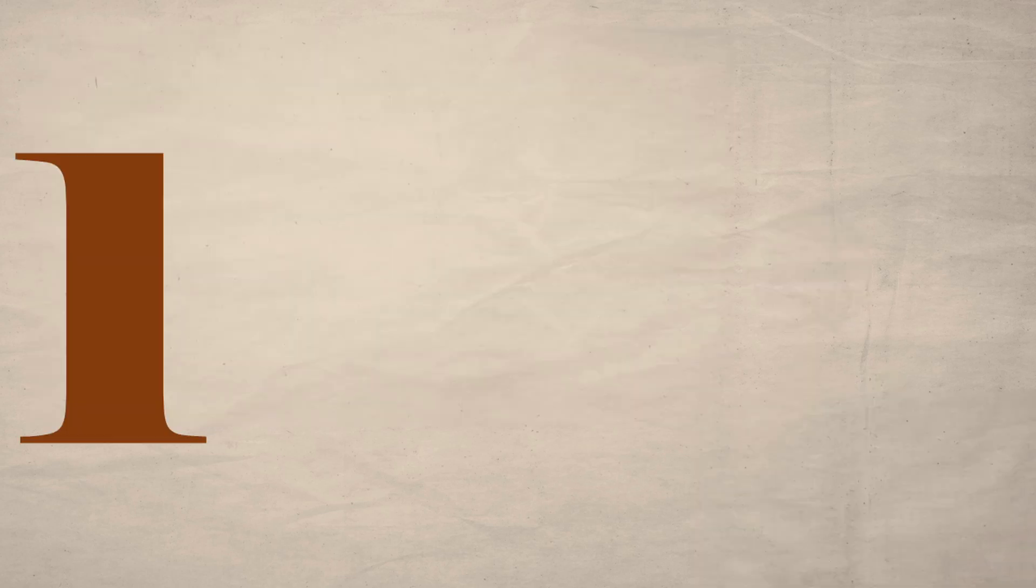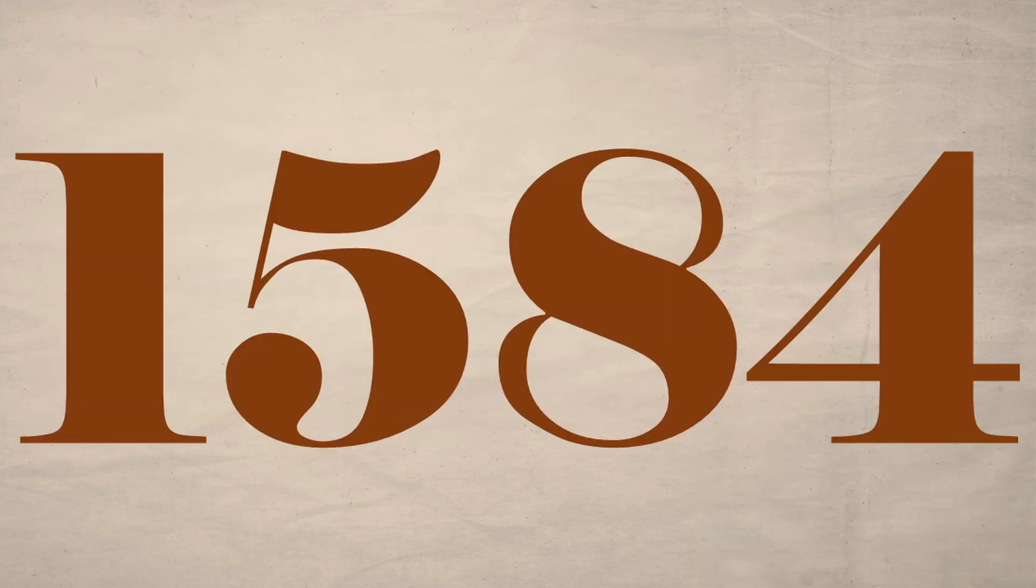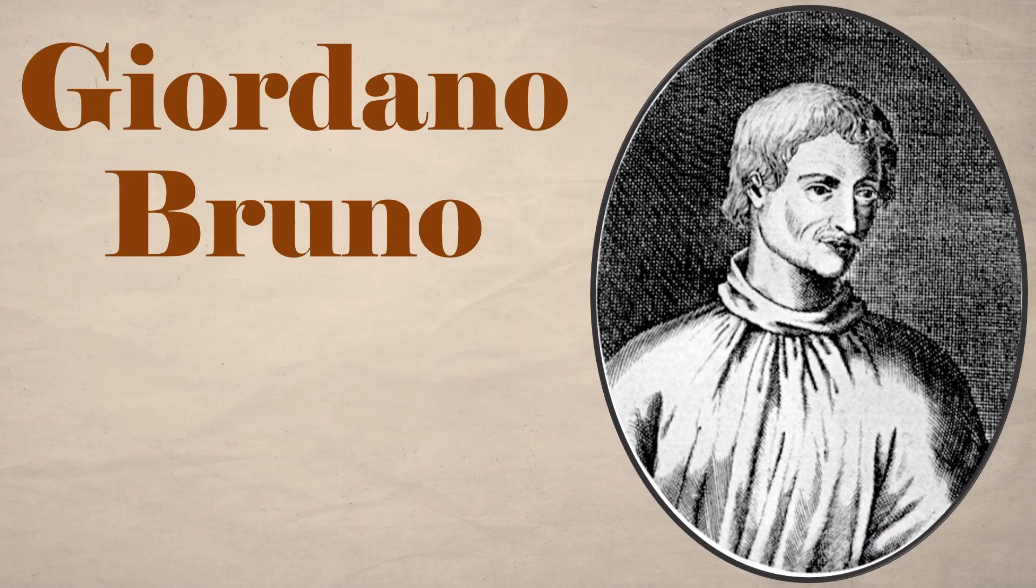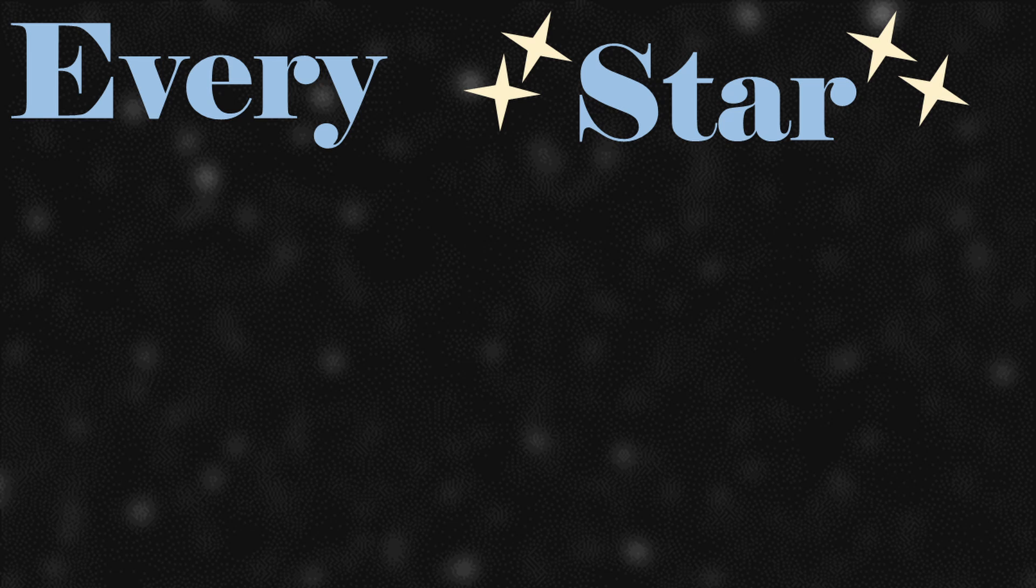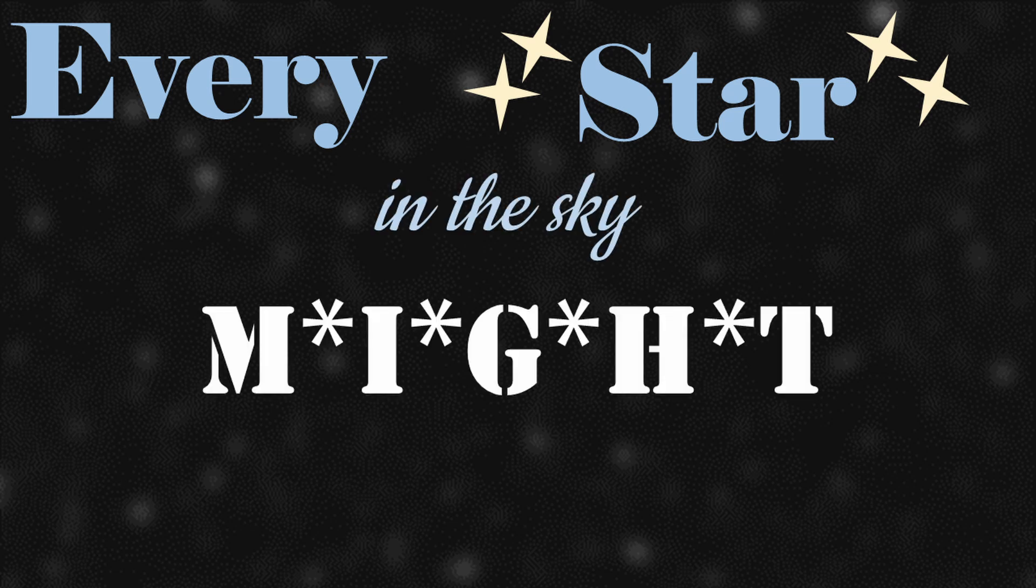Despite this, it wasn't until 1584 that an astronomer named Giordano Bruno published a manifesto putting forth that just like our sun, every star in the sky might host its own system.